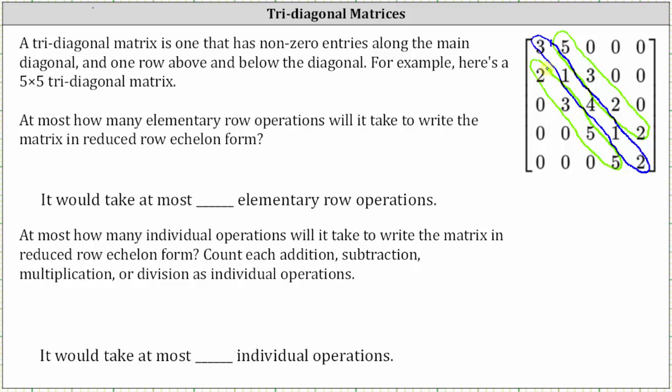At most, how many elementary row operations will it take to write the matrix in reduced row echelon form? To write the matrix in reduced row echelon form, we would need ones along the main diagonal and zeros above and below the ones.